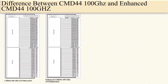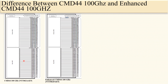Now we will see the difference between CMD44 100 GHz and enhanced CMD44 100 GHz. On the left-hand side you can see the block diagram of CMD44 100 GHz, and on the right-hand side the block diagram of enhanced CMD44 100 GHz. The difference is that there is an isolator in the enhanced CMD44 100 GHz at the common input, but in the CMD44 100 GHz there is no isolator.